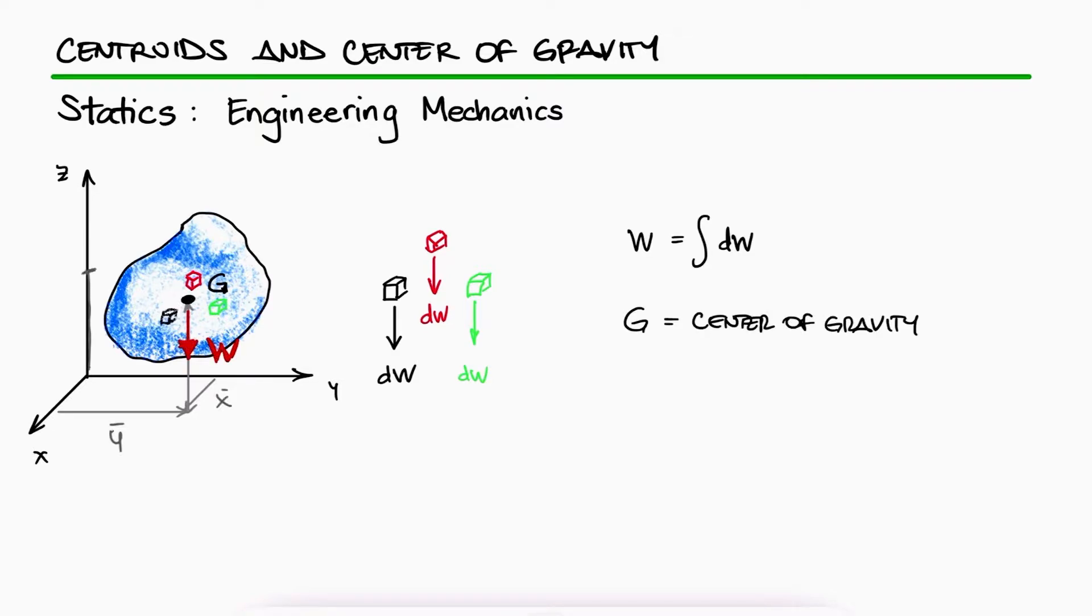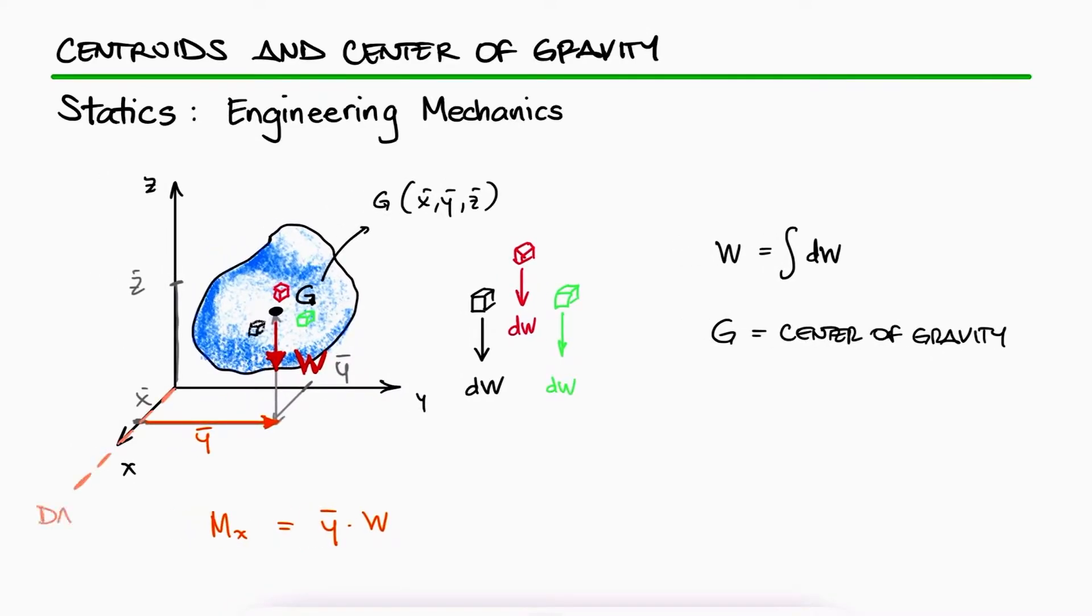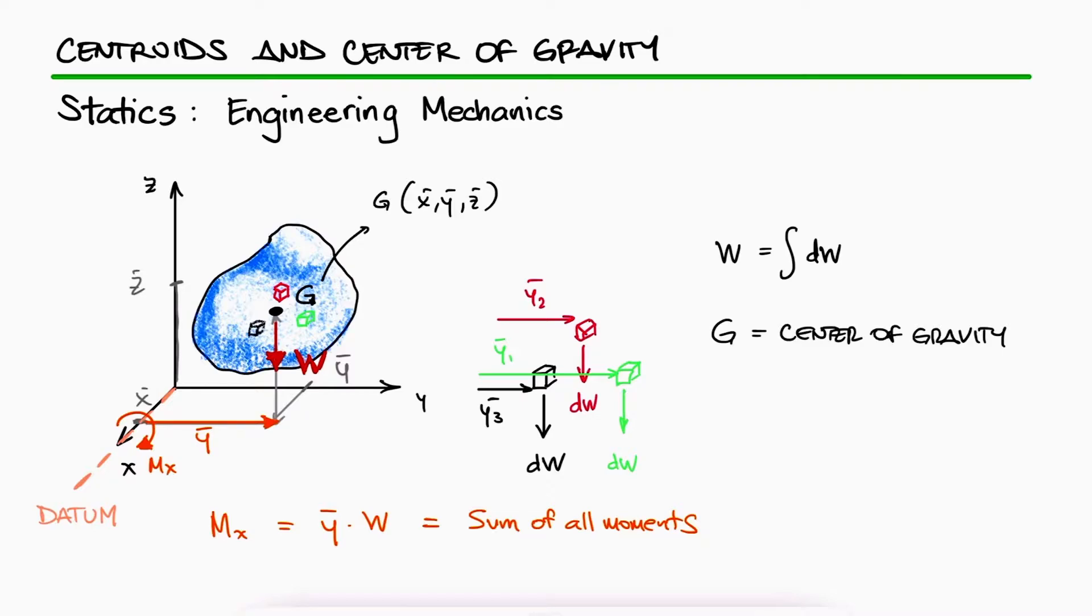The location of the center of gravity can be located in each of the three orthogonal directions by knowing that the moment caused by the weight, from a random point of reference or datum, which would be the distance to the center of gravity times the weight, has to be equal to the sum of moments of all the weights of the particles, which is just the integral of all the dw times the distance to each.